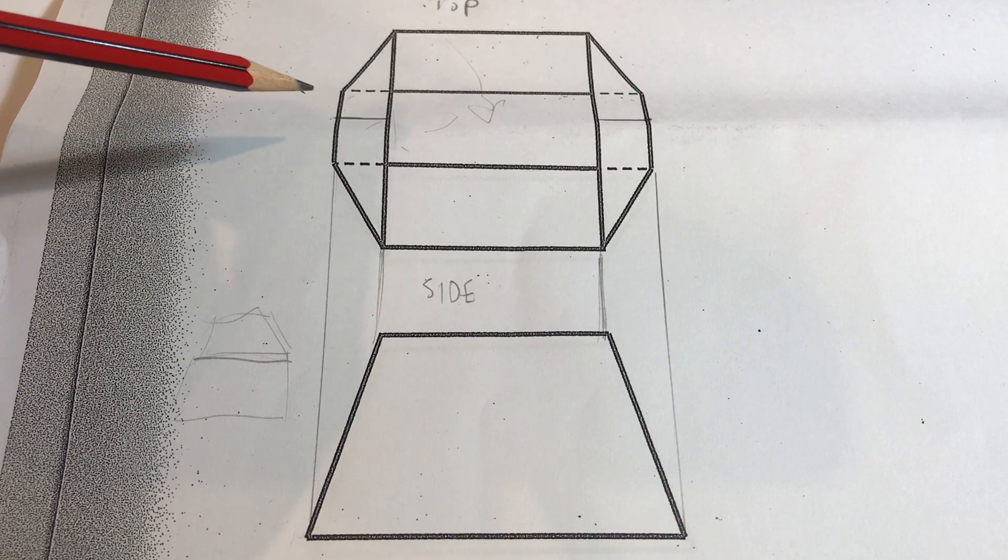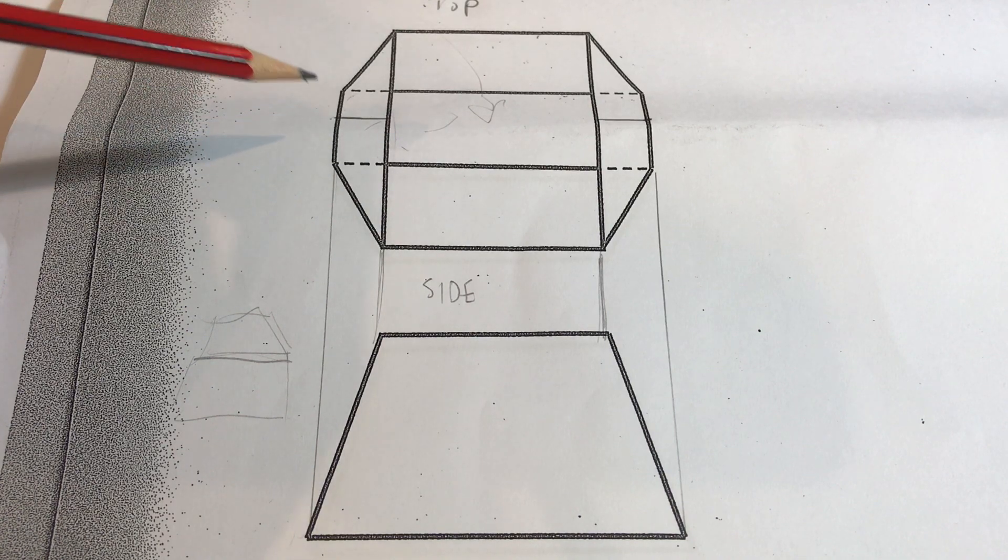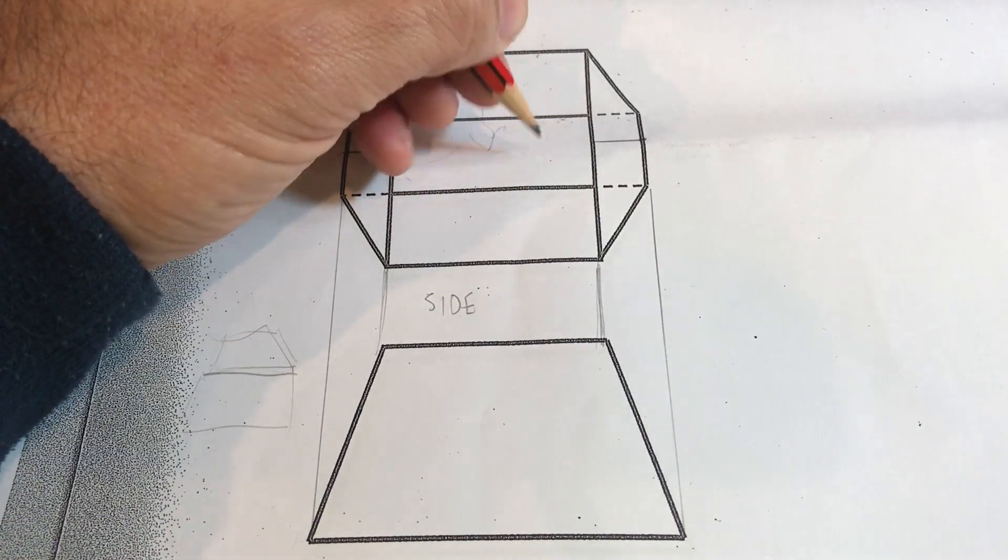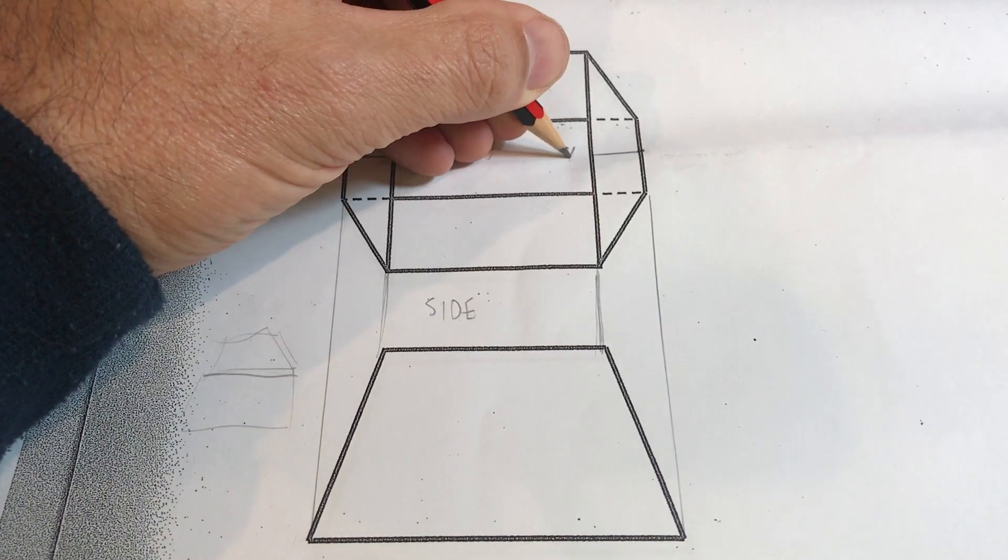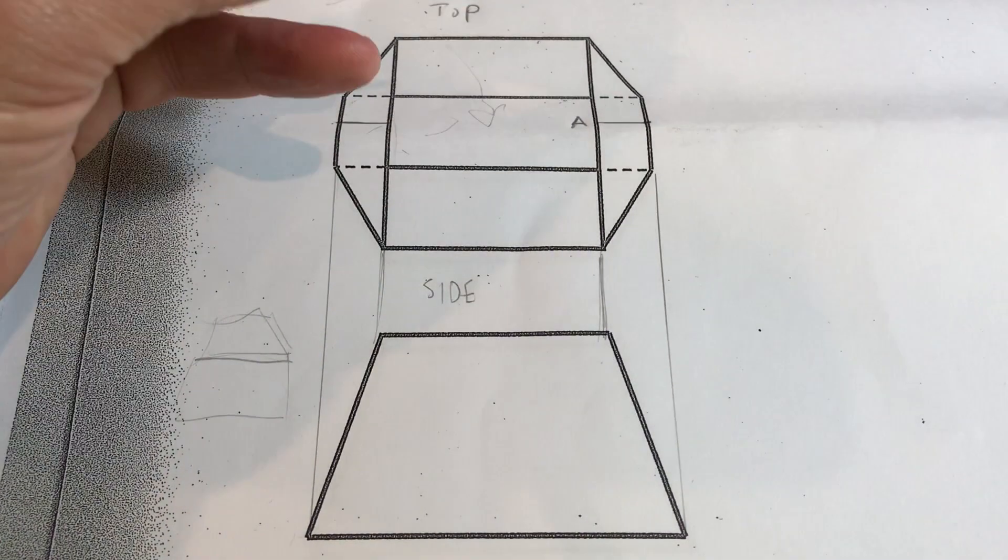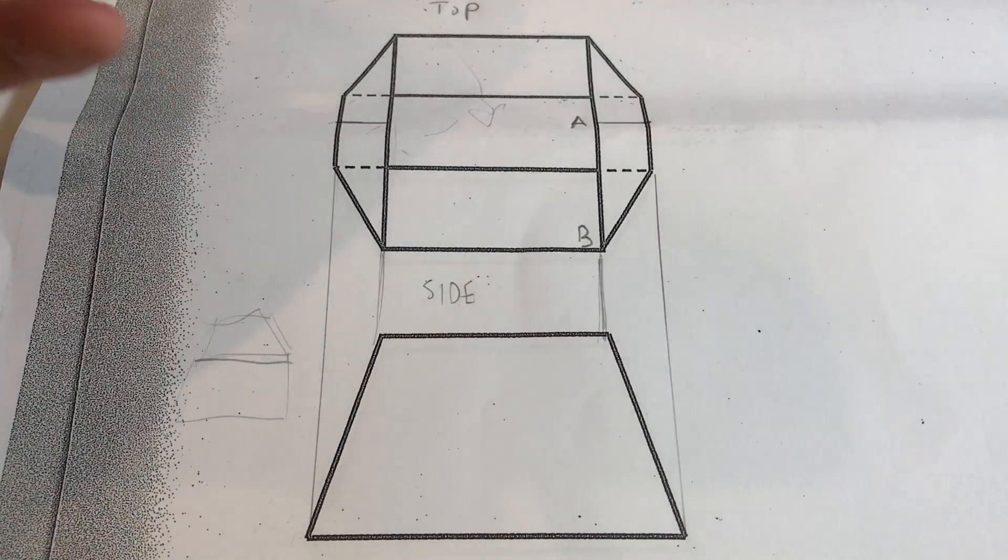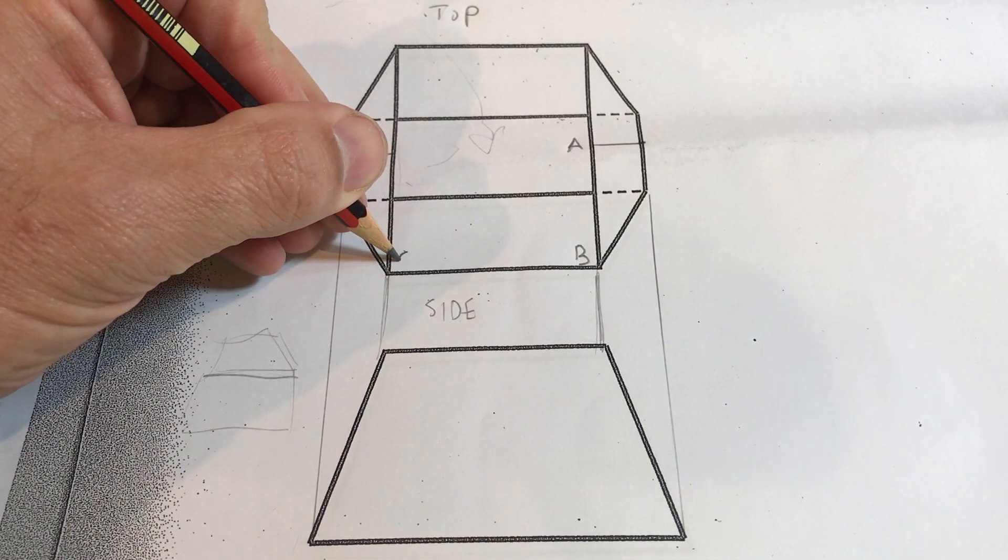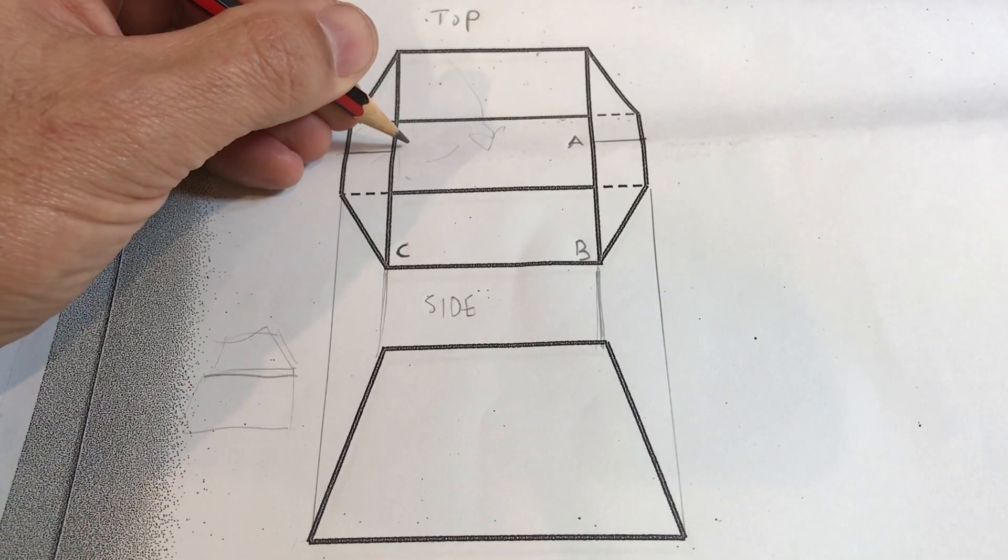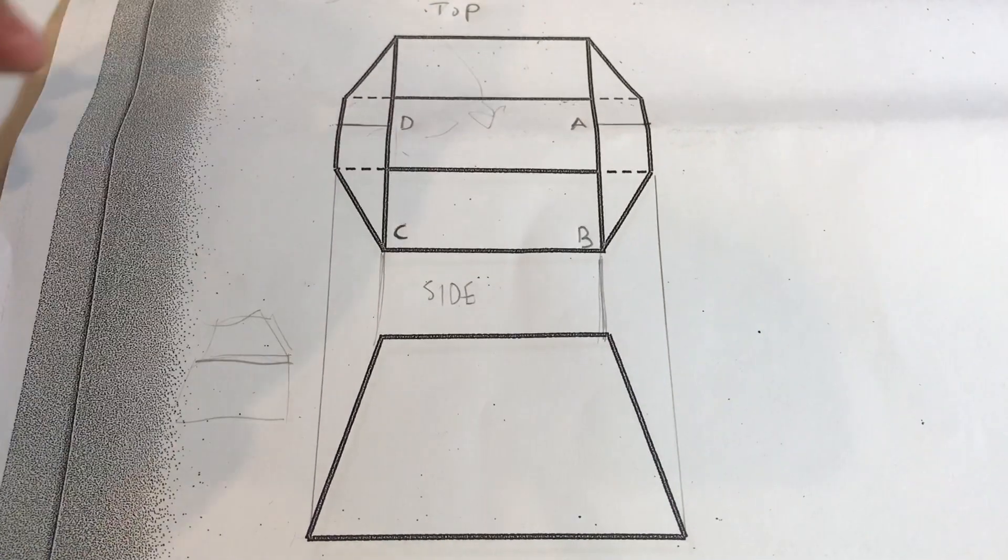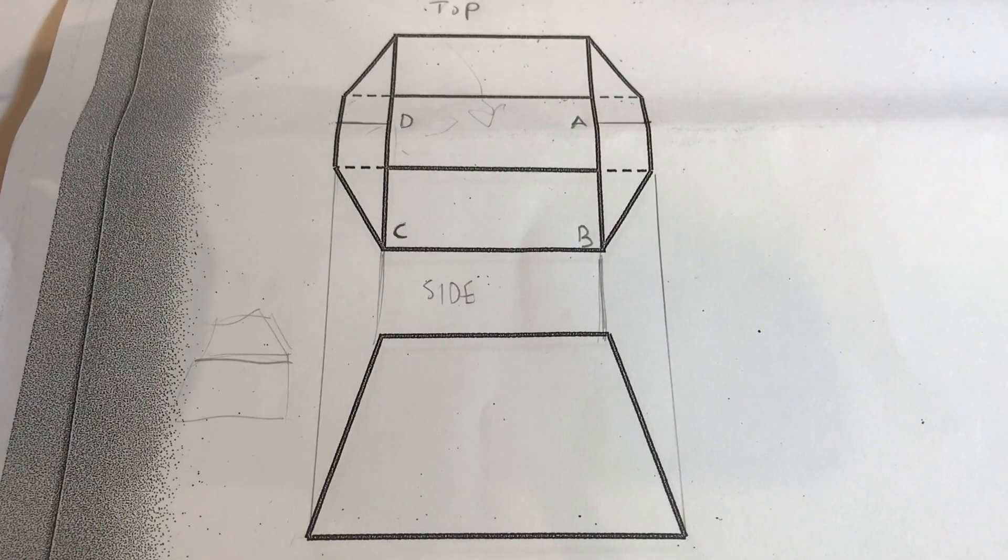So now what we need to do is we need to start the labeling process. So I'm going to start over here and go counter clockwise and I'm going to go this is a, this is a b corner b, this is corner c and this is corner d.